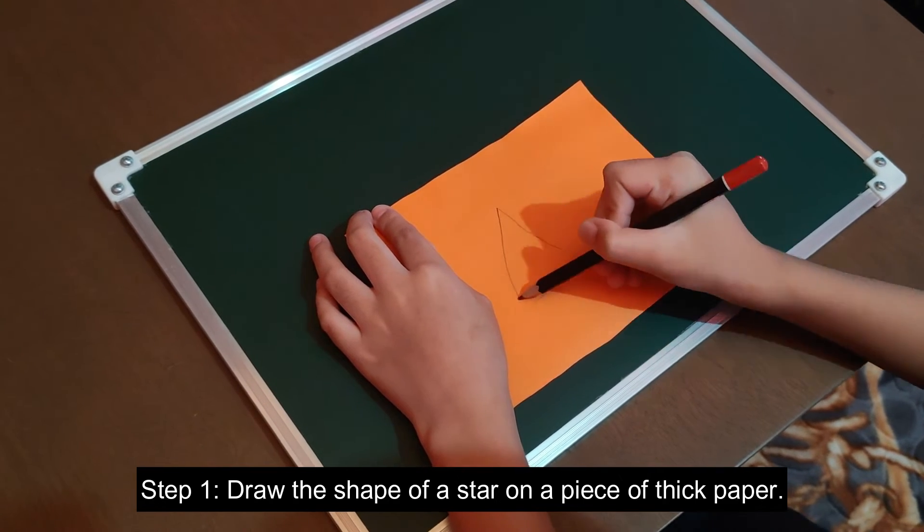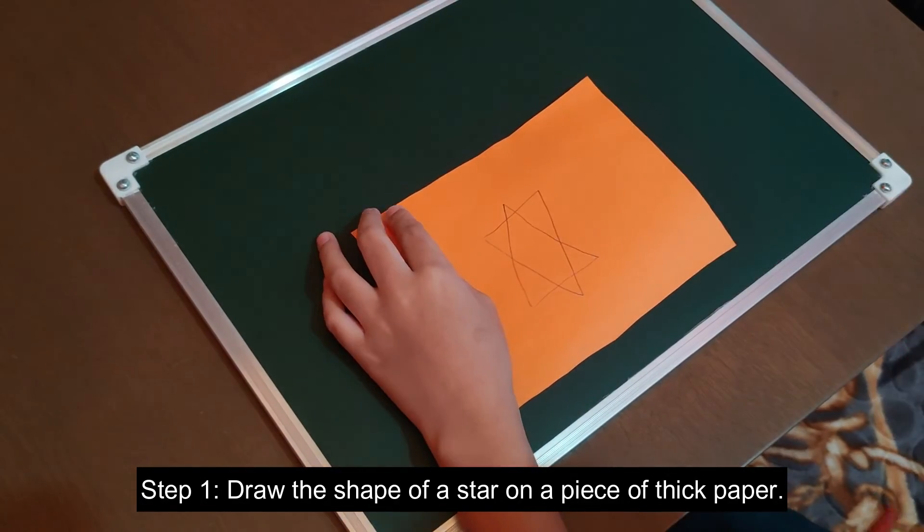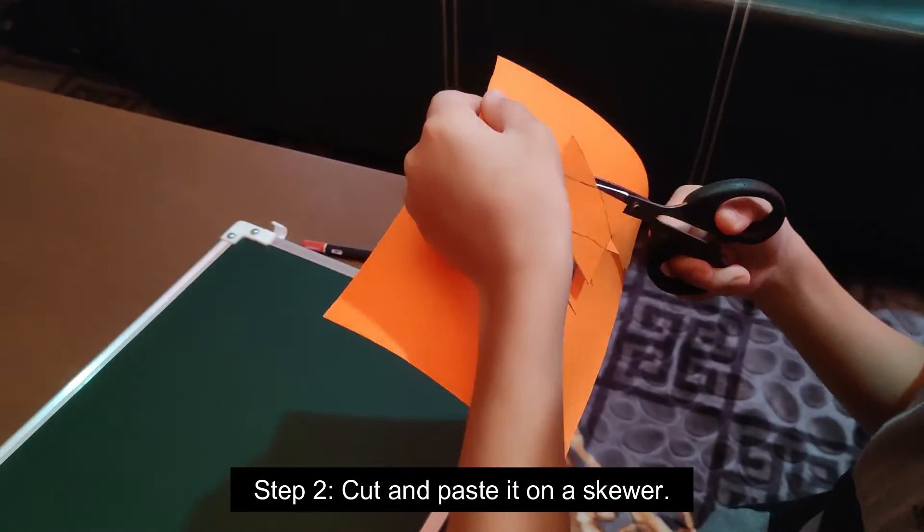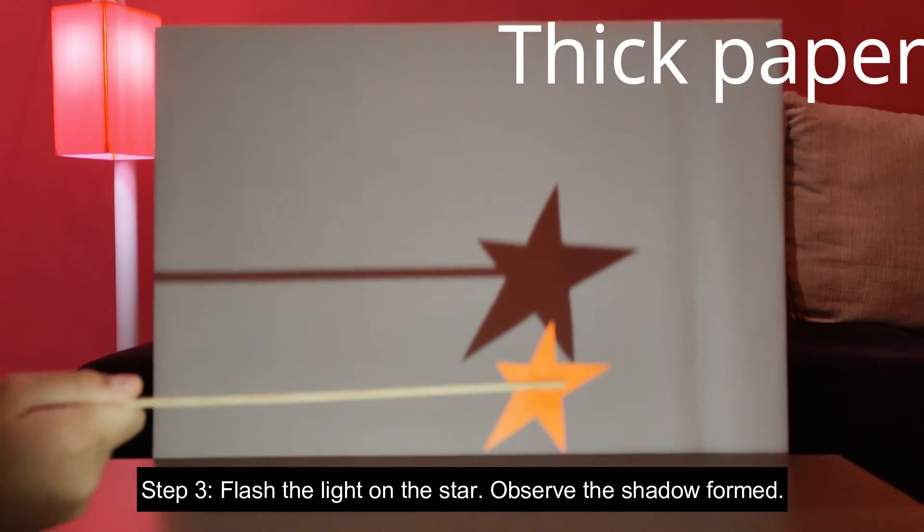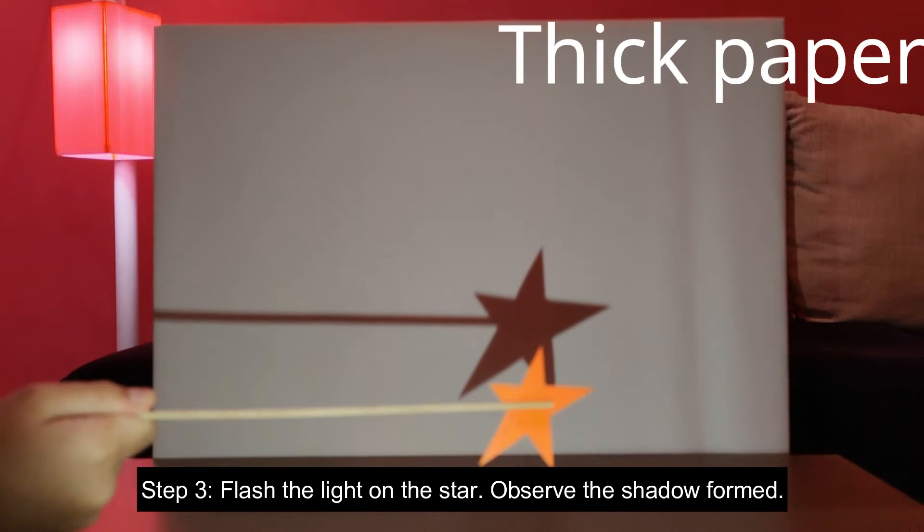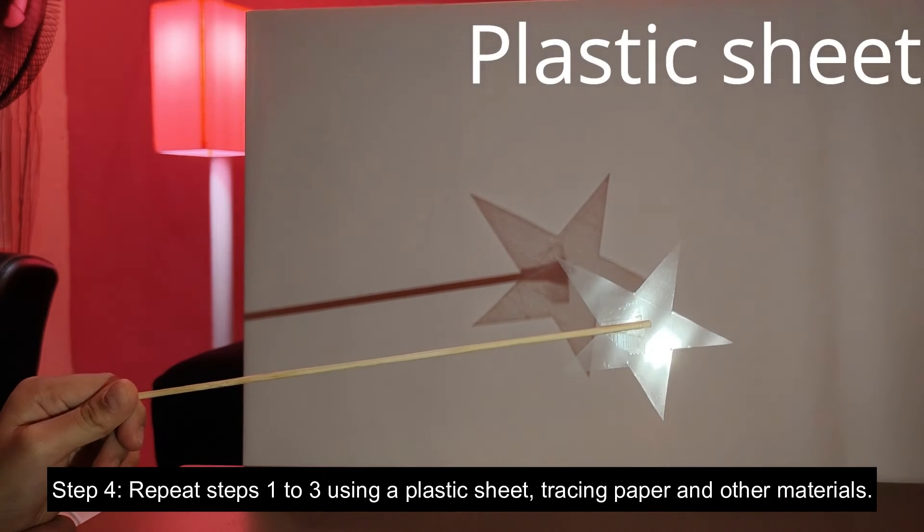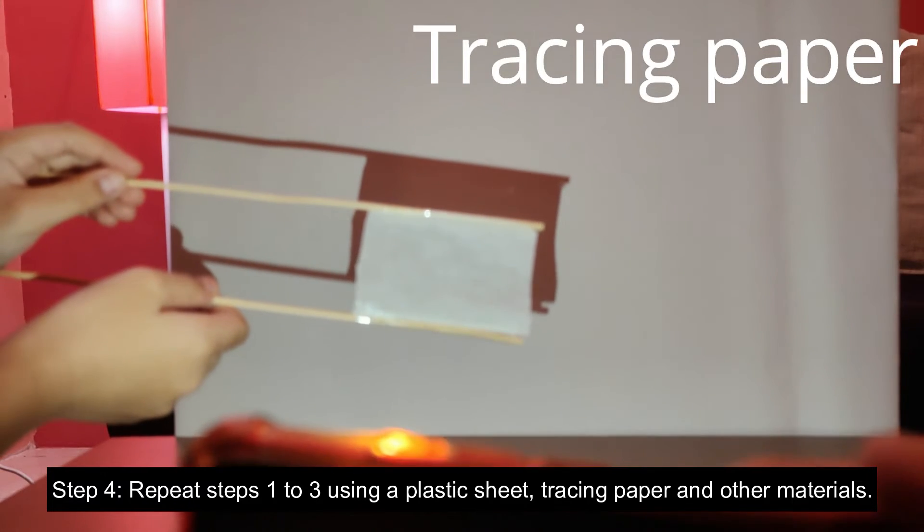Step 1: Draw the shape of a star on a piece of thick paper, or any shape you like. Step 2: Cut and paste it on a skewer. Step 3: Flash the light on the star and observe the shadow formed. Repeat steps 1, 2, and 3 using a plastic sheet, dressing paper, and all of the materials that we have prepared earlier.